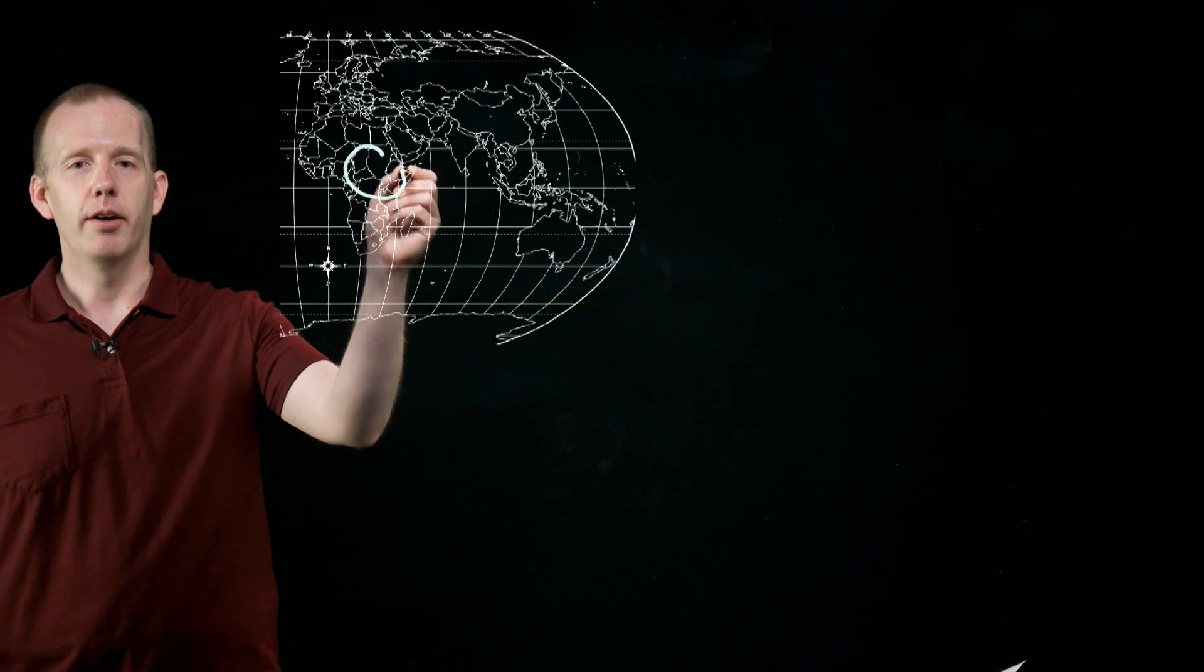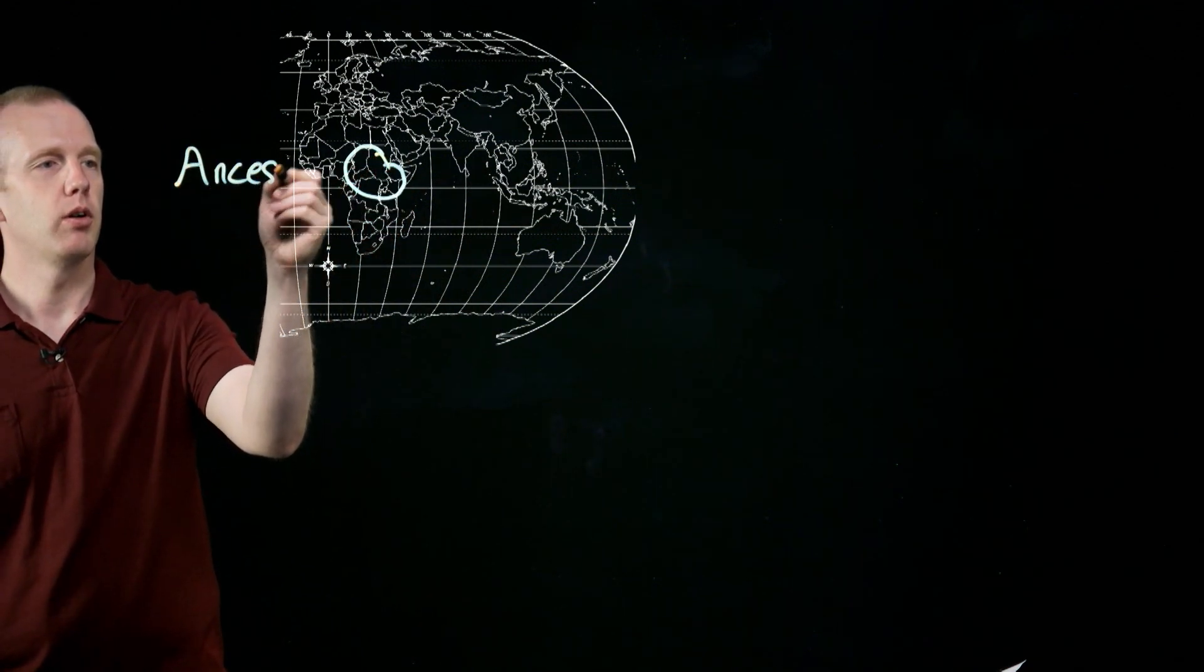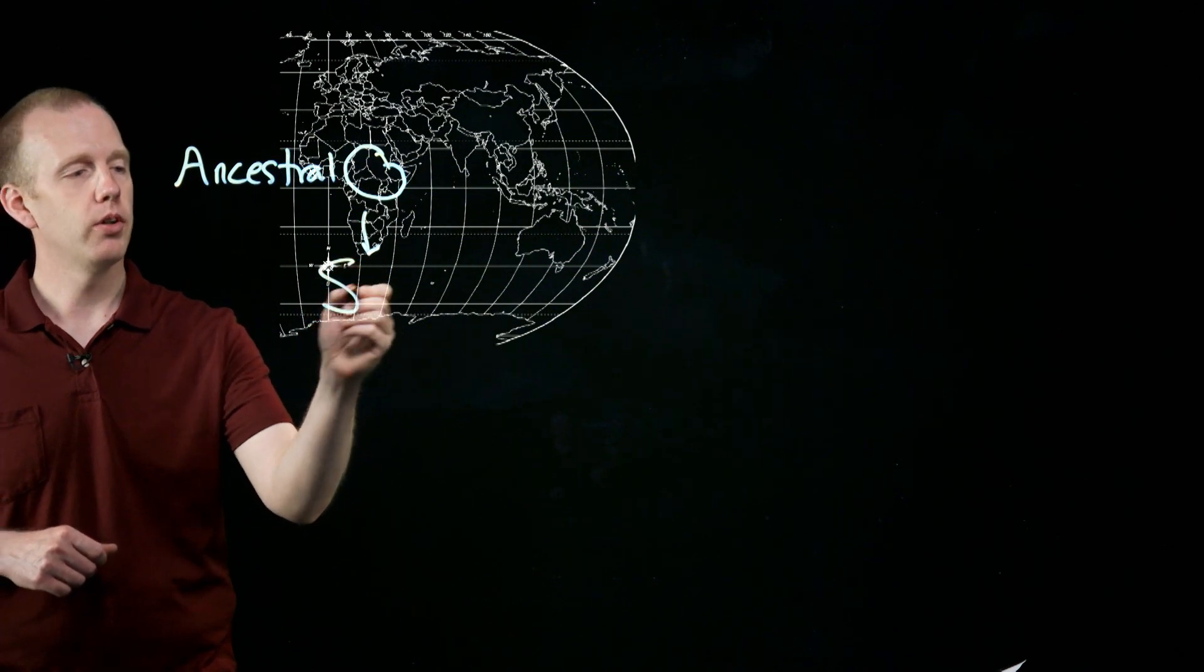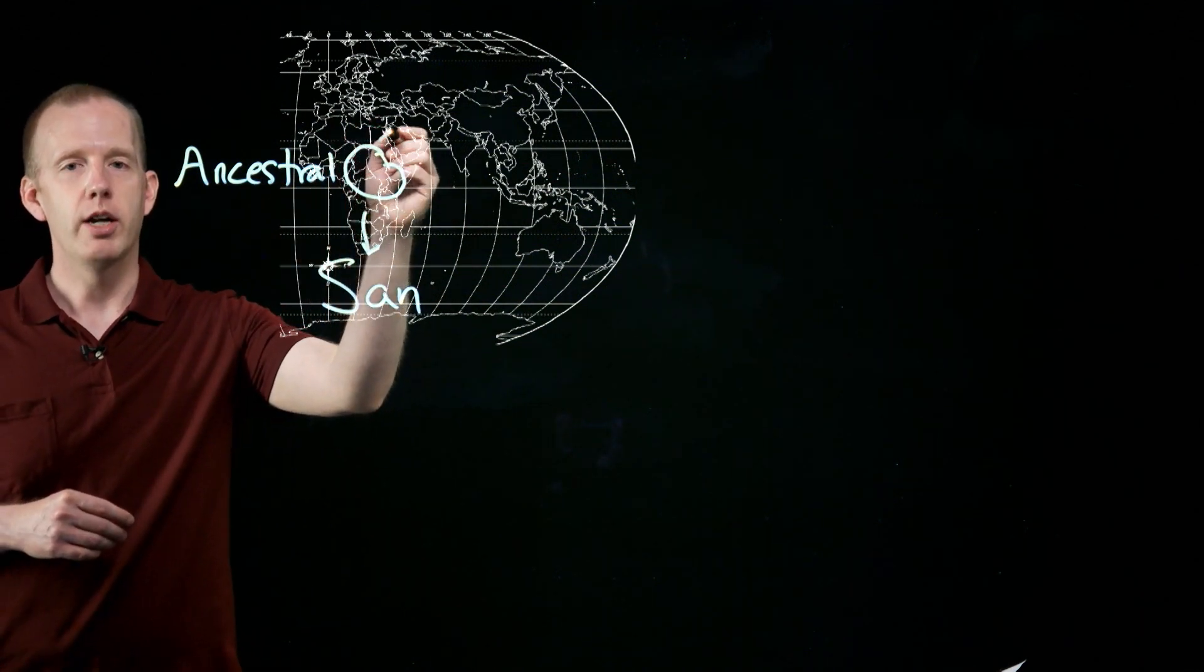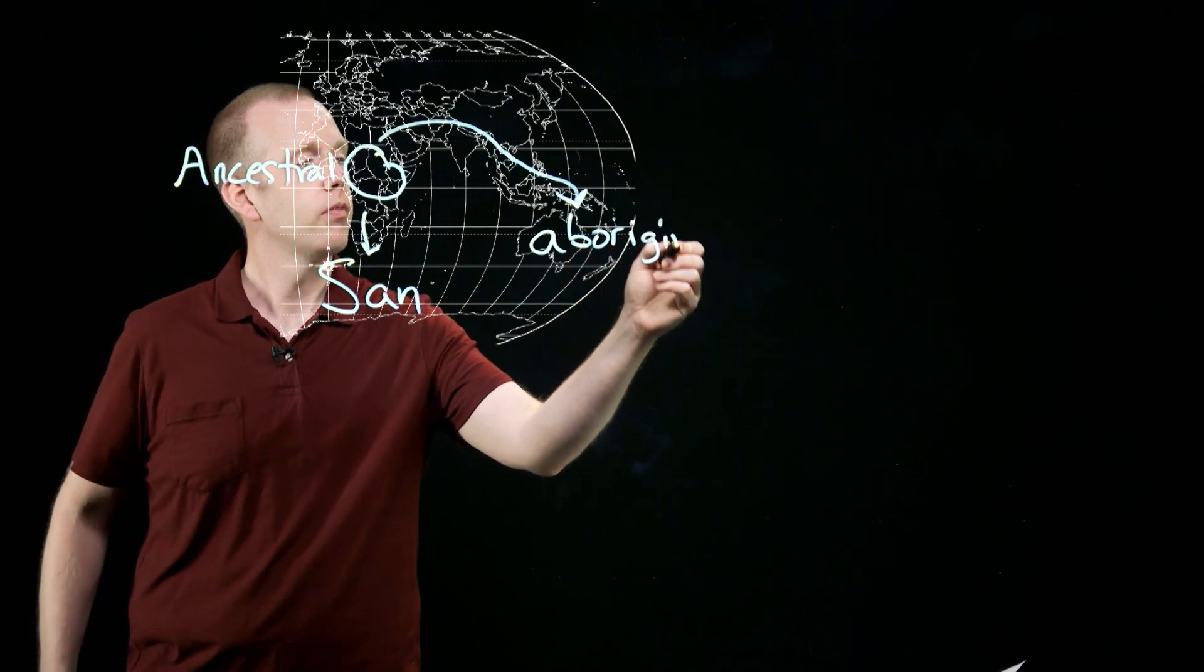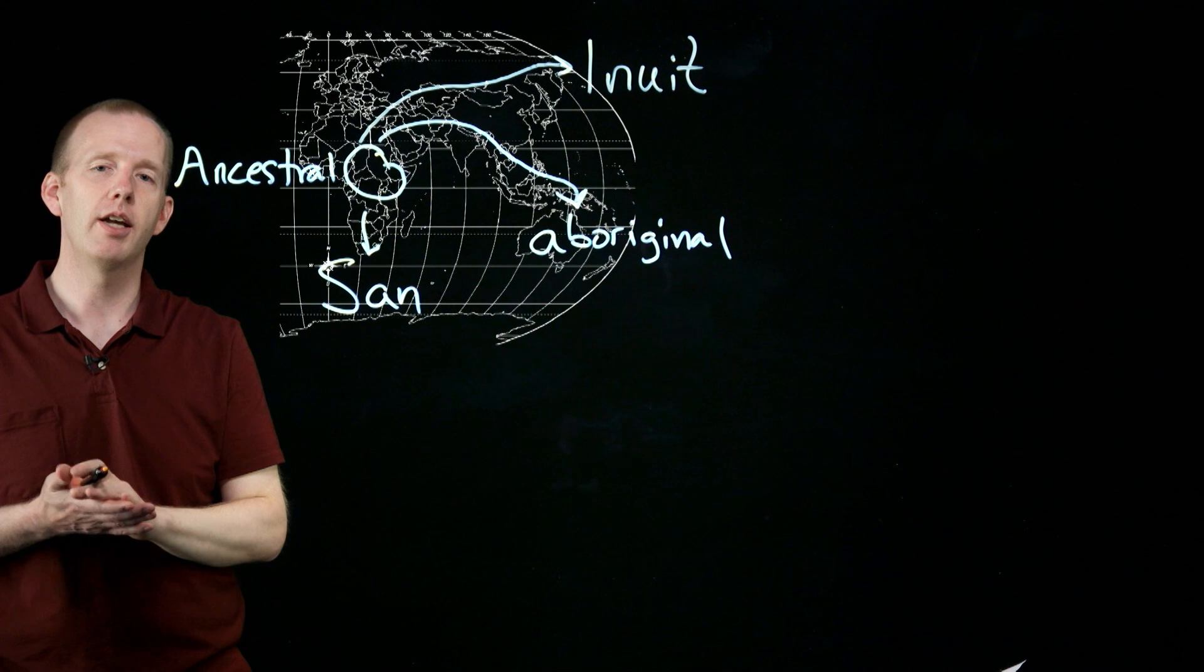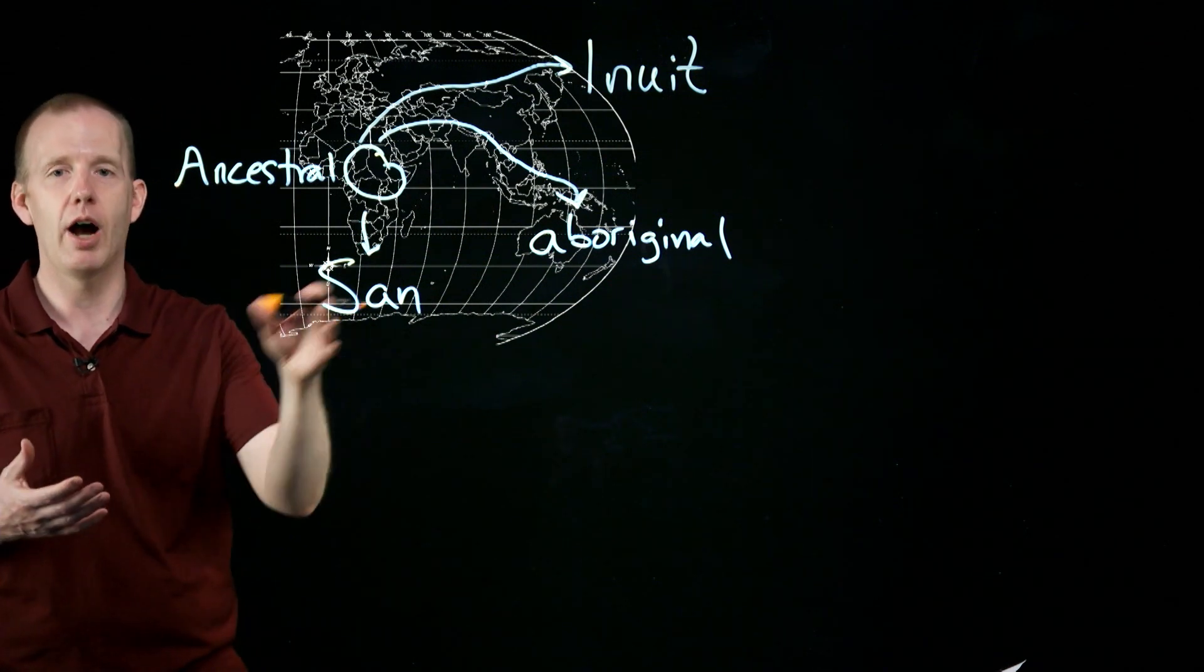So to start, we start in Africa where the ancestor of all modern humans lived. There's a population that was the ancestral population - think of this as the start of the human family tree. Everybody came from this part of the world and then they migrated. Some populations migrated south to southern Africa where there are people like the San people. From that ancestral population, there were also migrations to Australia where we have now the aboriginal population, and also across Siberia and the land bridge to Alaska where now we have indigenous groups like the Inuit. I'm just going to be talking about these three groups as examples.